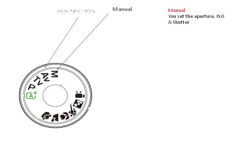Moving on to AV — some of you will have AV, some of you will have A — but it just means aperture or aperture value. You will have to set the aperture and the camera will then set your ISO and your shutter.